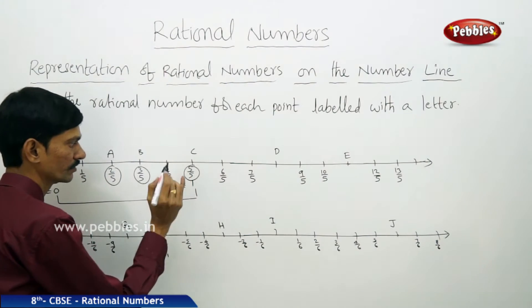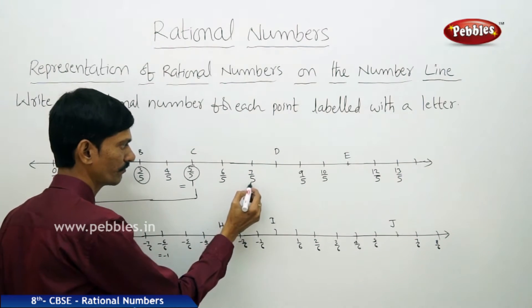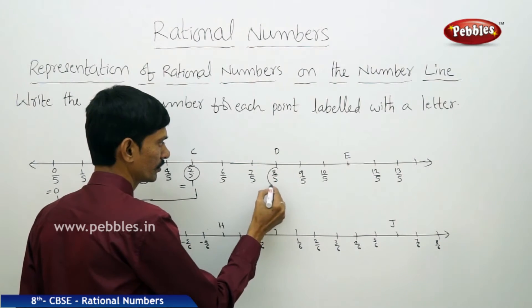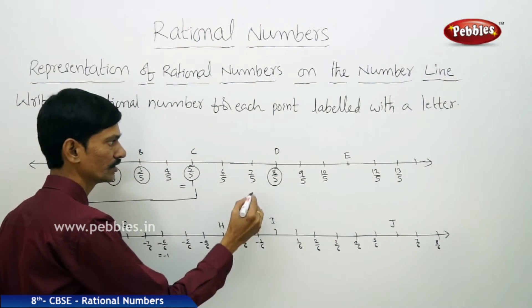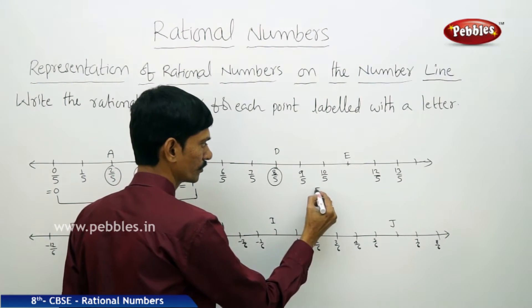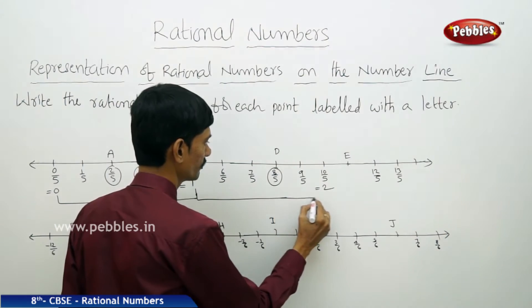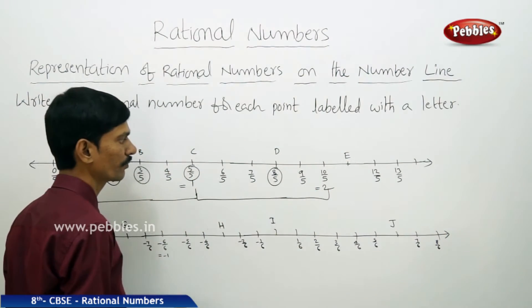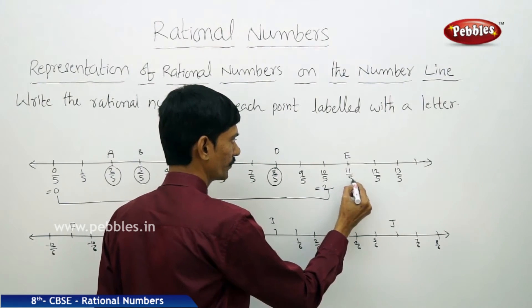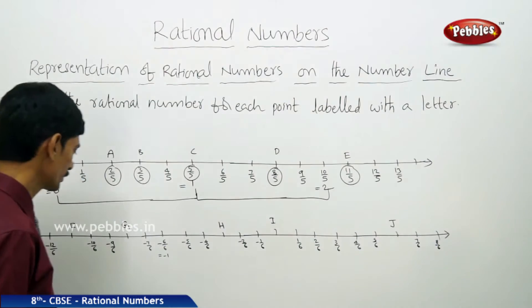Continuing from 1 to 2: 6 by 5, 7 by 5, and 8 by 5 — represented by D. Then 9 by 5 and 10 by 5, which equals 2. From 2 to 3, divided into 5 equal parts: 11 by 5 is represented by E.